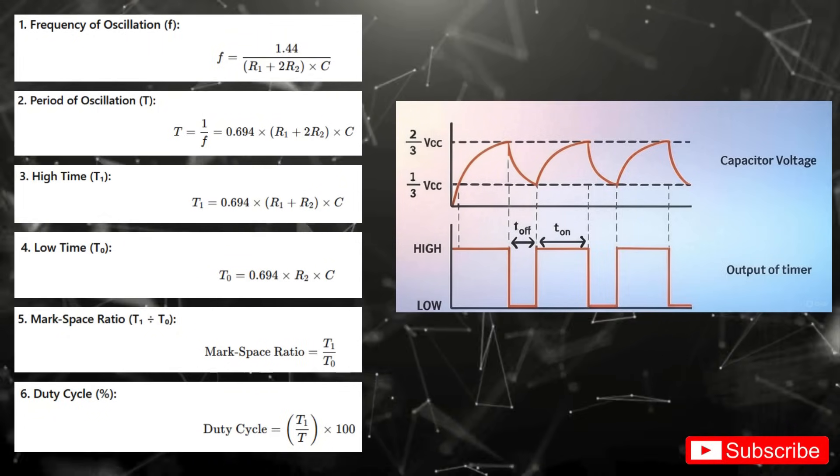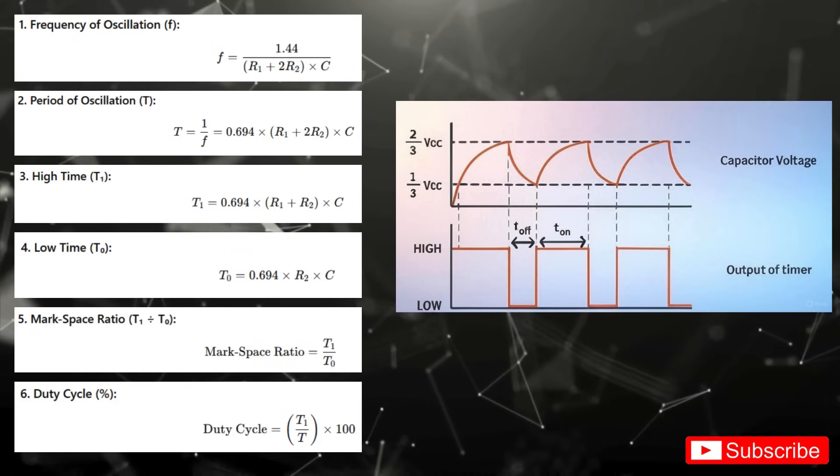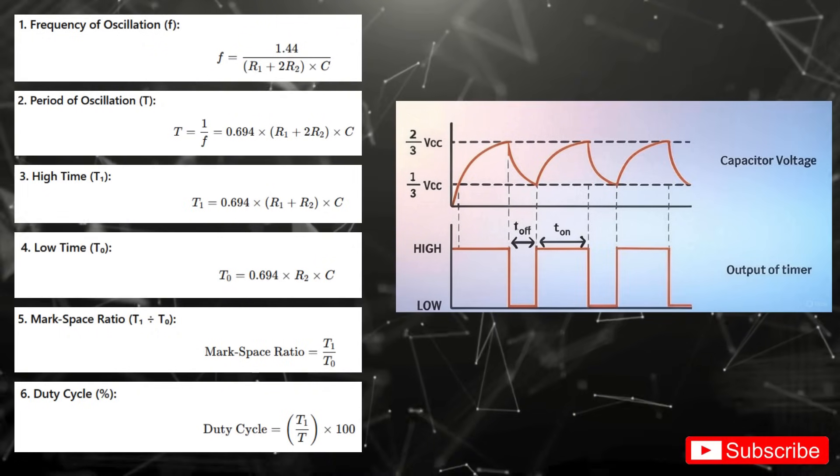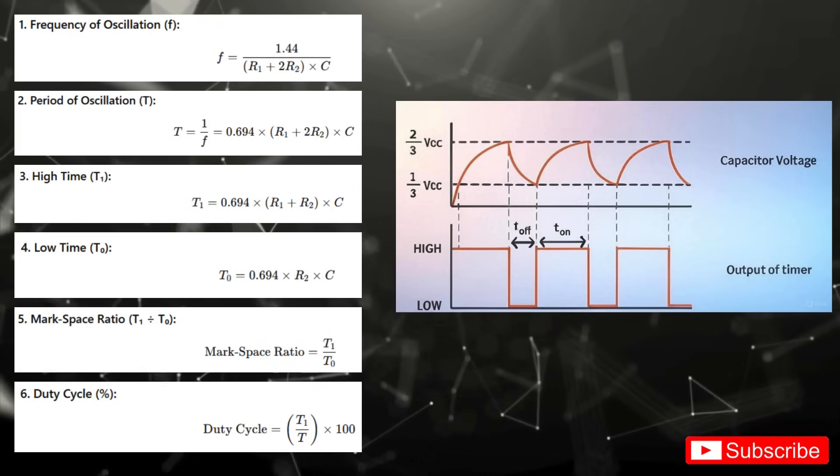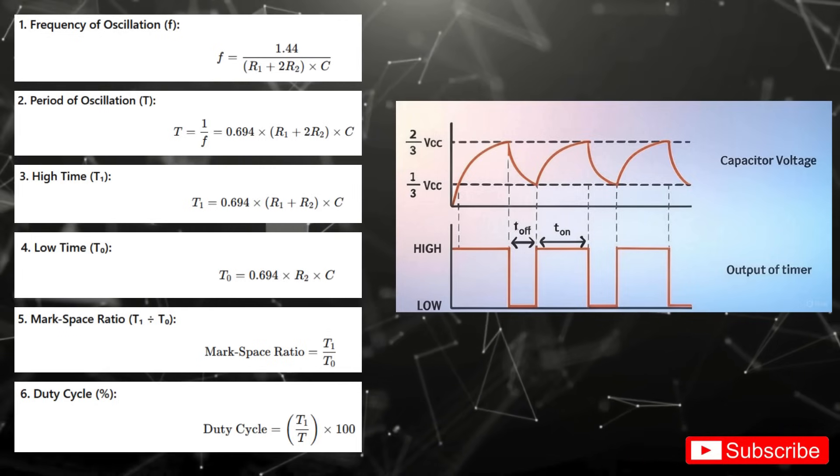To analyze the waveform, we look at two key ratios. The mark space ratio, which compares high time to low time, T1 divided by T0. And the duty cycle, which shows what percentage of the time the output is high, T1 divided by T times 100.